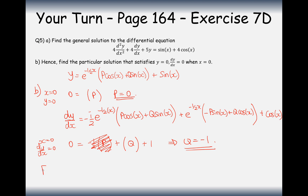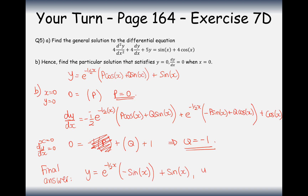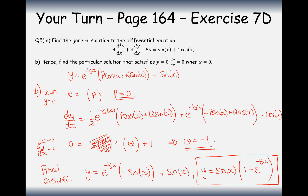So the final answer: y equals e to the minus half x times (0·cos(x) minus sine(x)) plus sine(x). This simplifies to y equals sine(x) times (1 minus e to the minus half x). And that's the answer to question 5 on exercise 7D.